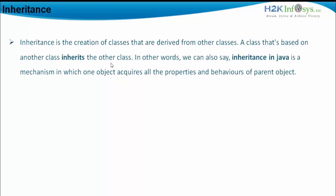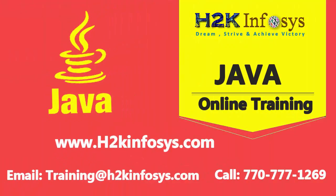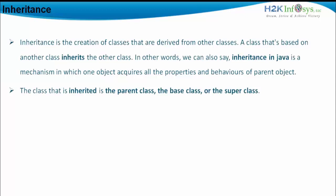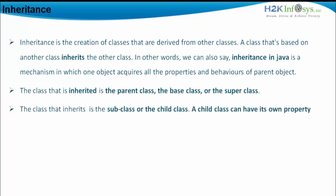A class that is based on another class inherits the other class. Inheritance in Java is a mechanism in which one object acquires all the properties and behaviors of the parent object. The class that is inherited is called the parent, base, or superclass. The class that inherits is called the subclass or child class. Apart from inherited properties, the child class can also have its own variables, methods and constructors.